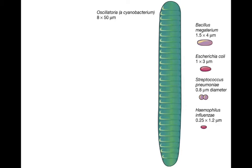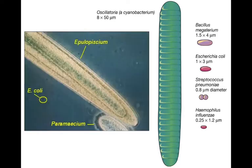A typical bacterial or prokaryotic cell is on the range of one to five micrometers, though there are exceptions. Haemophilus influenzae is only about 0.25 micrometers in width. Streptococcus pneumoniae is less than a micrometer in diameter. Oscillatoria, a cyanobacterium, is much larger than that range. The largest bacterium ever identified is Epulopiscium, found in the surgeonfish. This microorganism can grow to a length of 0.75 millimeters, or 750 micrometers — visible to the naked eye. For comparison, E. coli is a micrometer in width and three micrometers in length, and Epulopiscium is actually larger than a paramecium, a single-celled eukaryote.